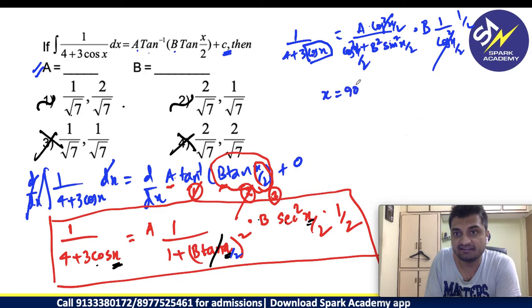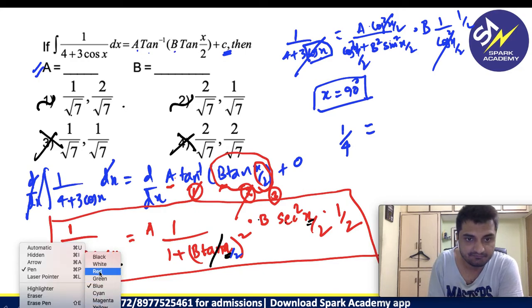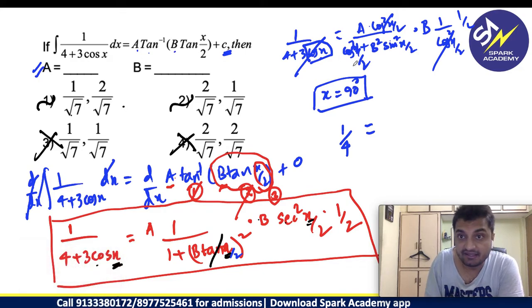Now, what you can do is instead of x I will give some other value. Can I give 90 degrees? If you give 90, what will happen? Cos 90 is 0. This part is gone. You are getting 1 by 4 equal to, again here, let me use a different colour pen.